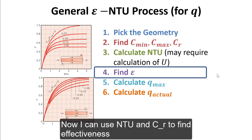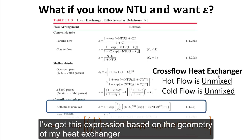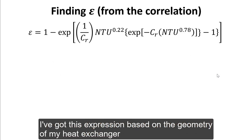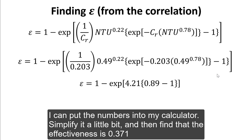Now I can use NTU and C_R to find effectiveness. I've got this expression based on the geometry of my heat exchanger. I know everything I need for this equation, so I put the numbers into my calculator, simplify it a little bit, and find that the effectiveness is 0.371.